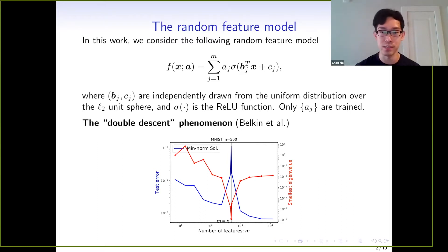Here we show an example of the random feature model on the MNIST data with 500 data samples. We can see that the generalization error, shown by the blue line, becomes huge at M equals N, where the number of parameters equals the number of data. Because of this peak, the curve experiences two descents when M tends to infinity.